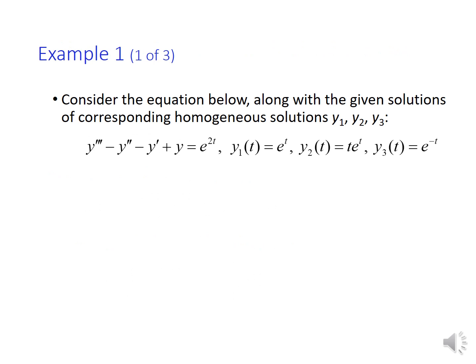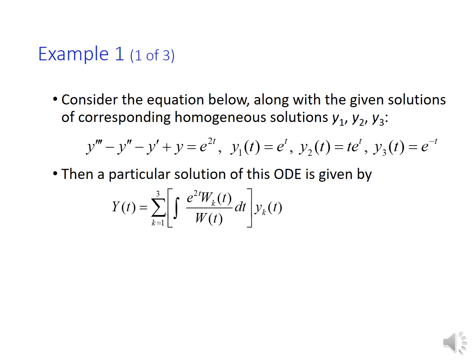Here was an example which shows how to find a particular solution to a third order linear differential equation with the nonhomogeneous term g equals e to the 2t. And suppose that we are already given the fundamental set of solutions. As a remark, one can obtain these solutions using the characteristic equation for the associated homogeneous equation. Then a particular solution of the ordinary differential equation is given by the sum of three terms where the integral expression is nothing but the function uk we are looking for.